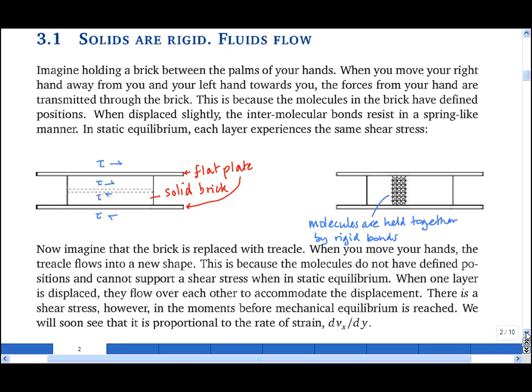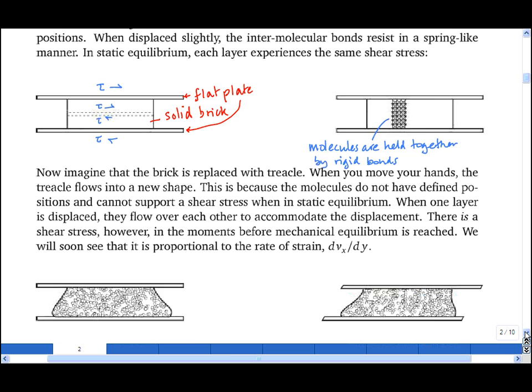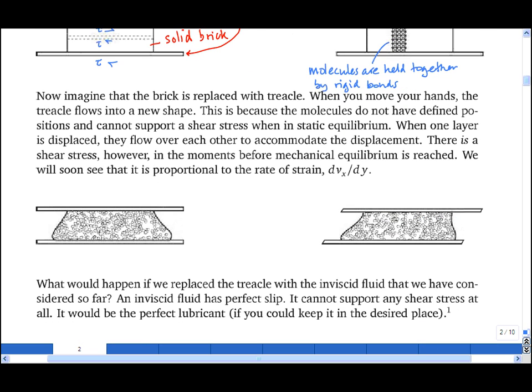Now let's imagine replacing the solid brick with a viscous fluid such as treacle. I'm going to do the same experiment. I shall apply a shear stress to the top and a shear stress to the bottom of the two flat plates. And when I apply that shear stress, the treacle flows. The fluid cannot support a shear stress in static equilibrium, and this is because the molecules in this fluid are not held together by rigid bonds.